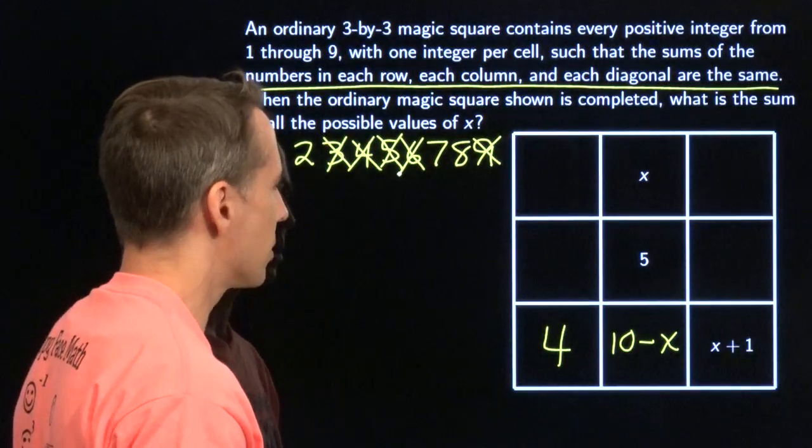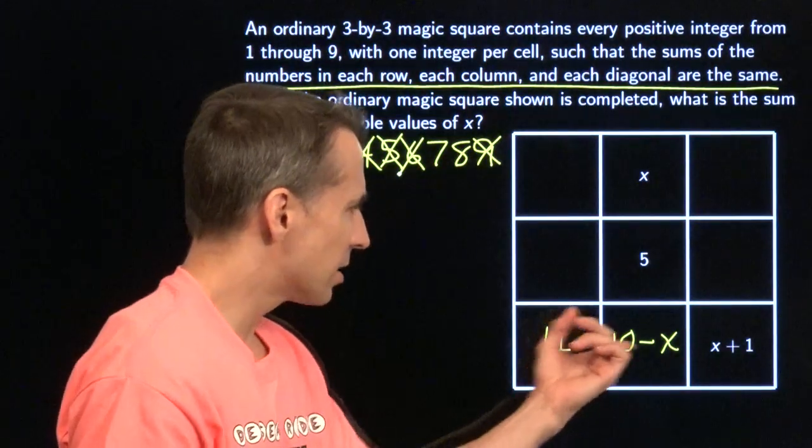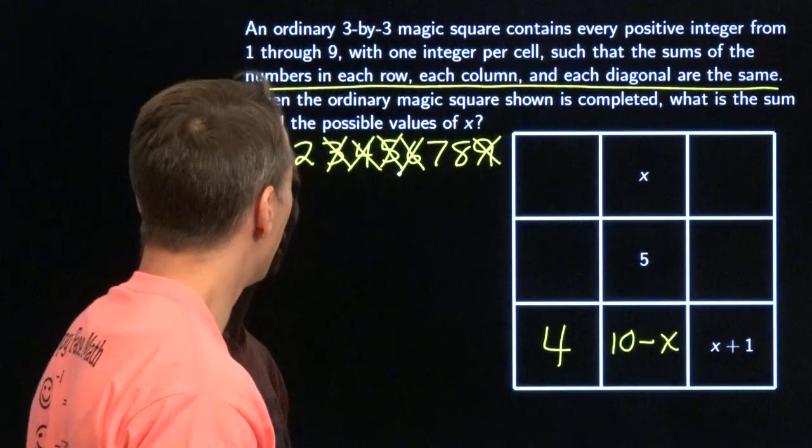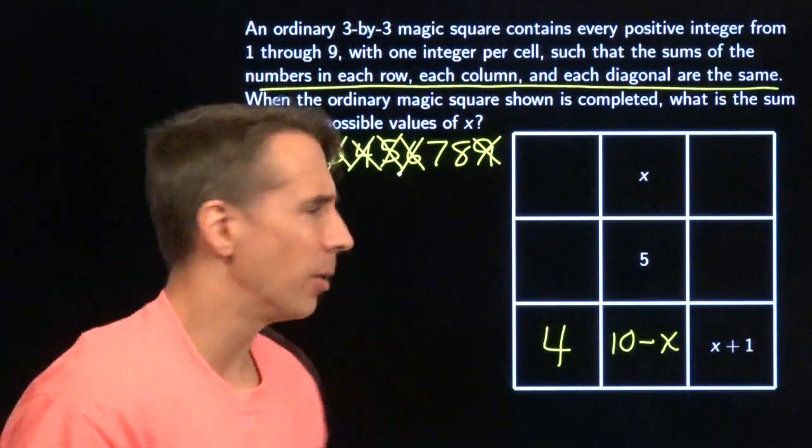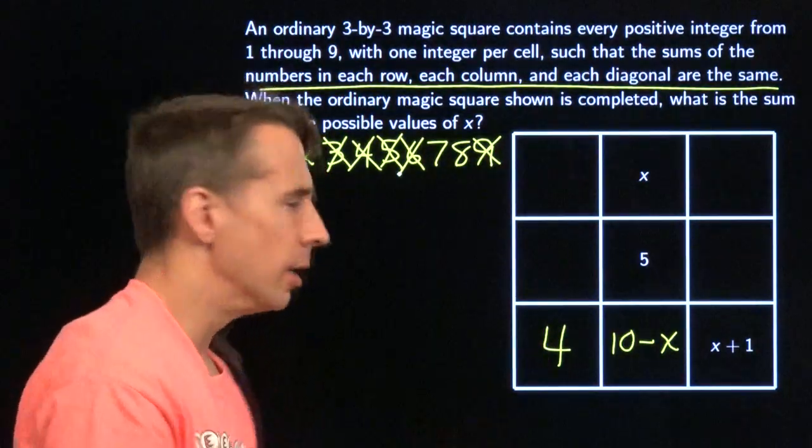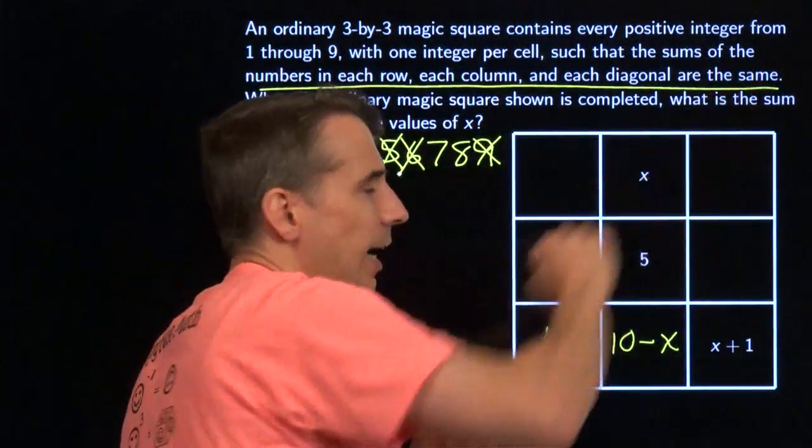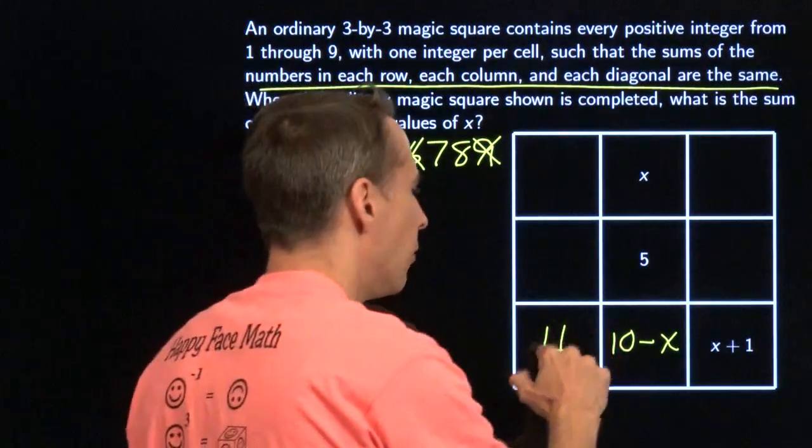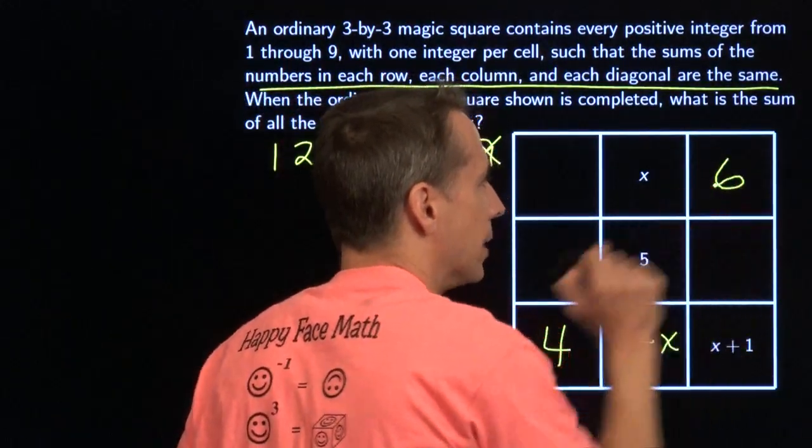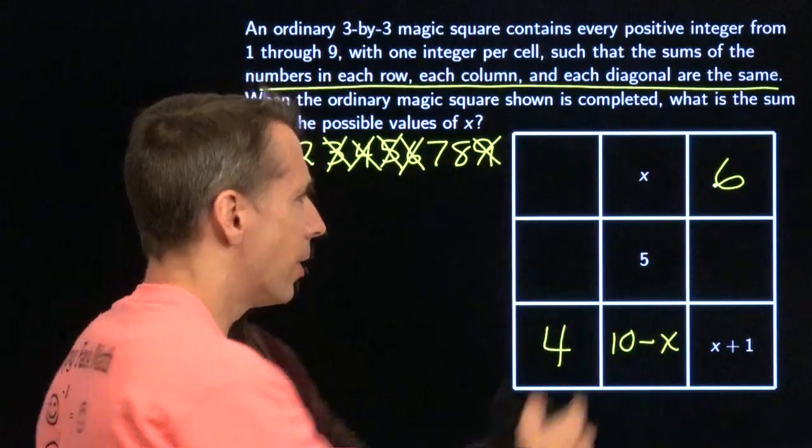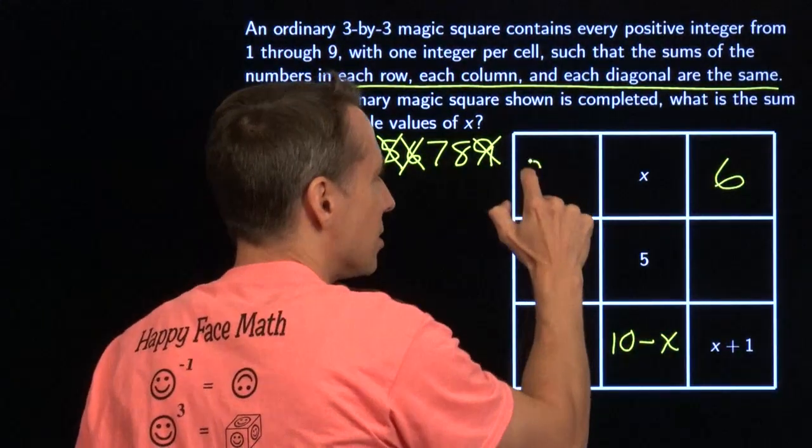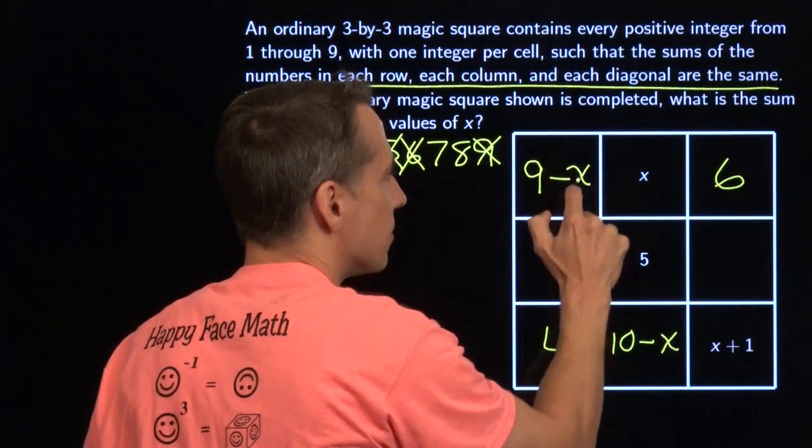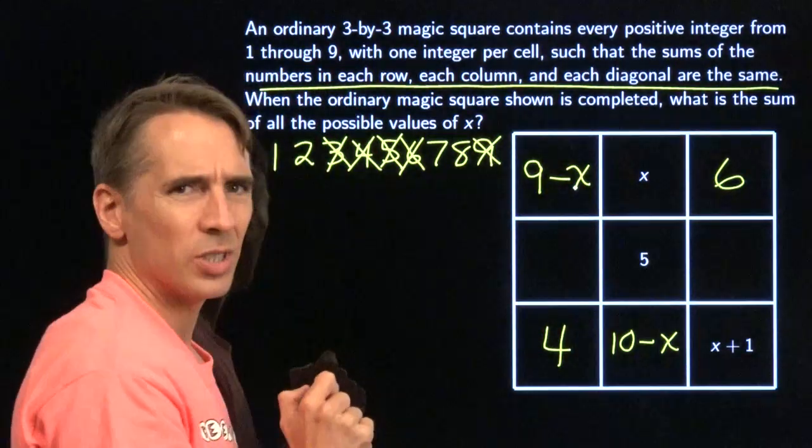What about the others? That 10 minus 1 is 9. Still seems okay. 2 seems okay. Let's keep going. Fill out more of the grid. 4 and 5, this diagonal has to add up to 15. 4 and 5 is 9. I need 6 more right there. Doesn't tell me a whole lot right away. Let's go this way. I've got a 6. I've got an x. This is 9 minus x. Still don't see any problems.